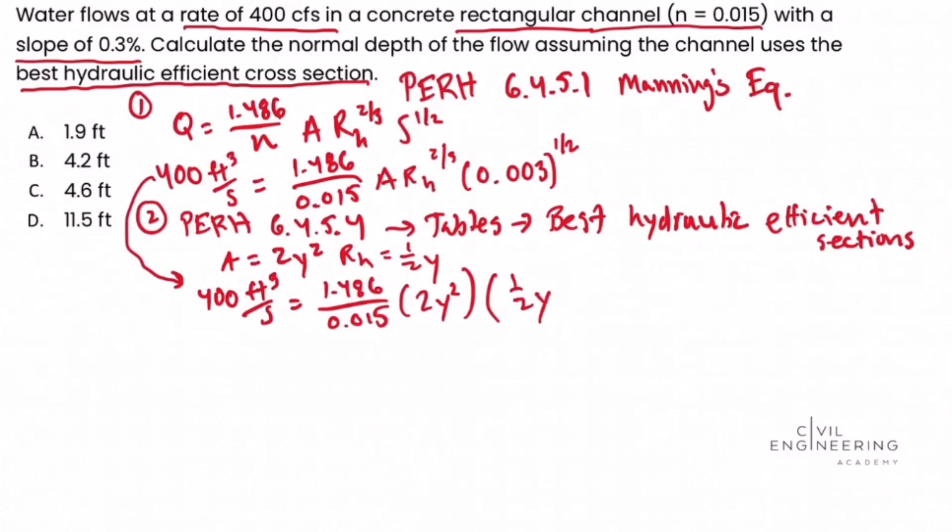We found that from our table. And remember, from Manning's equation, this quantity is raised to the 2 thirds, and then times our slope, 0.003, raised to the 1 half.